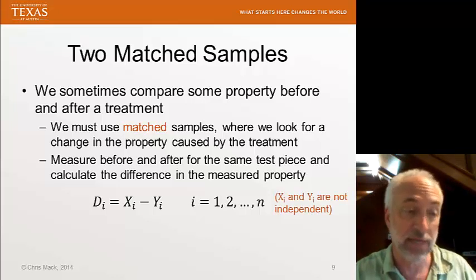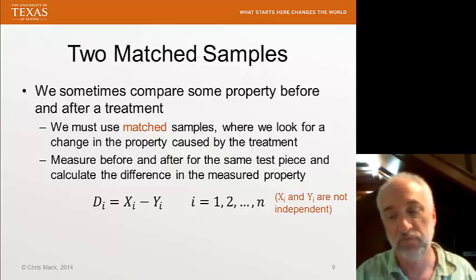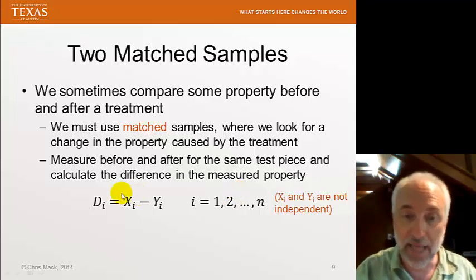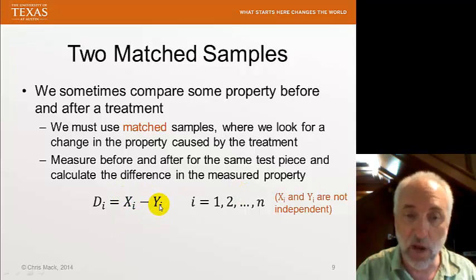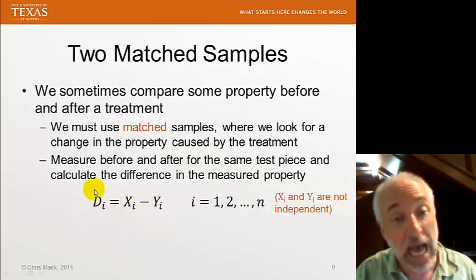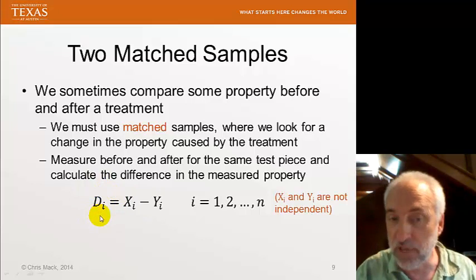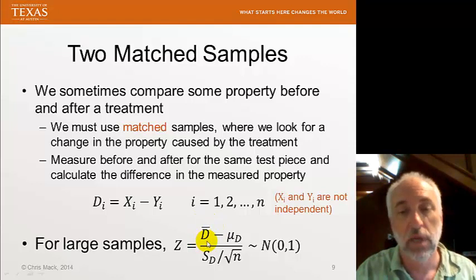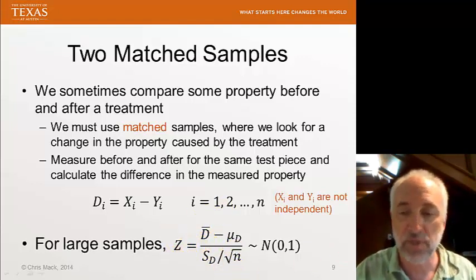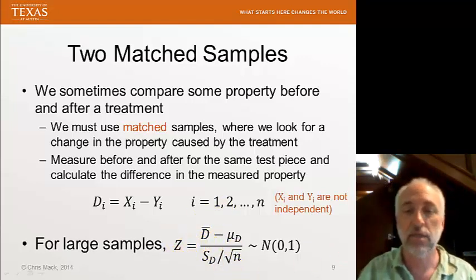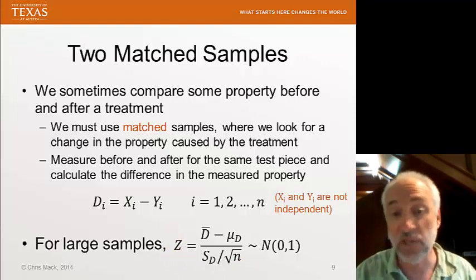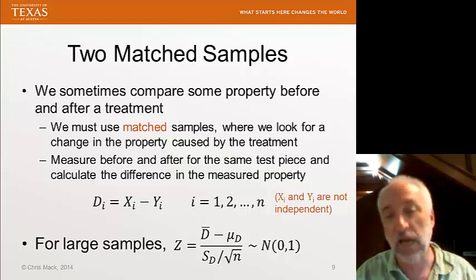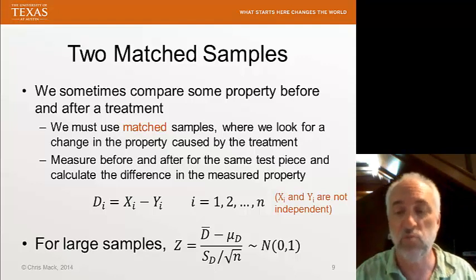Now, instead of doing analysis on x and analysis on y and calculating their averages and taking their difference, I will calculate all the differences ahead of time and then find the mean value of the differences. And, again, for large samples, the central limit theorem kicks in and this z statistic will end up being about standard normal. And we can do the same kind of confidence intervals and hypothesis tests that we've done before.